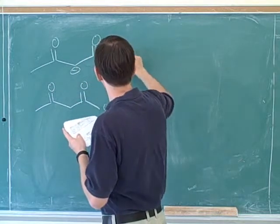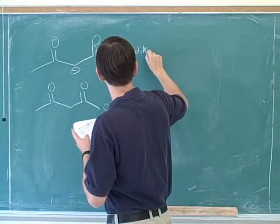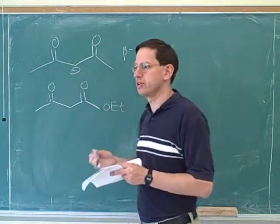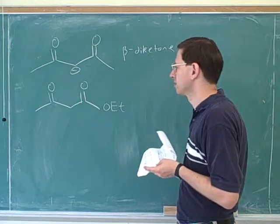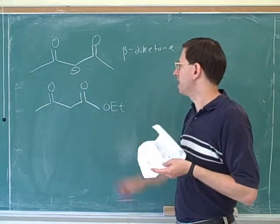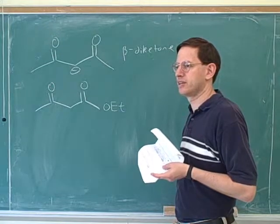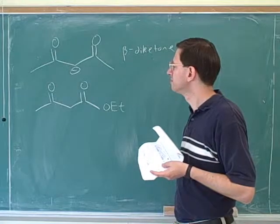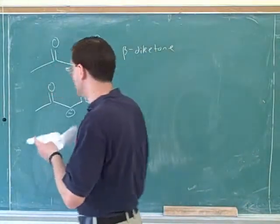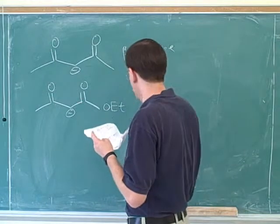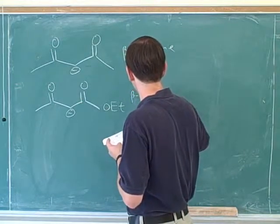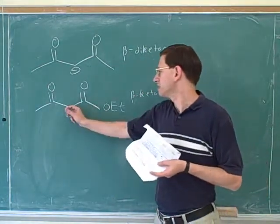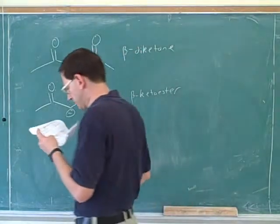This up here is what we call a beta-diketone — it's a diketone where one of the ketones is beta to the other. It would make a moderate enolate, so this would be a good Michael donor. Similarly, a beta-keto ester has a keto group and an ester group; it's also a relatively stable enolate, so this would also be a good Michael donor.